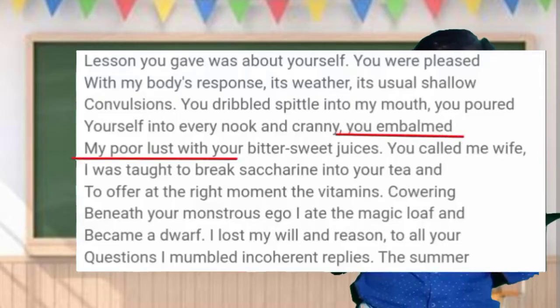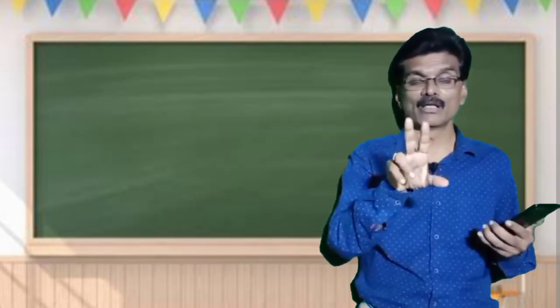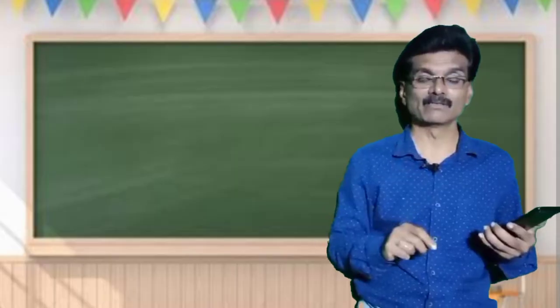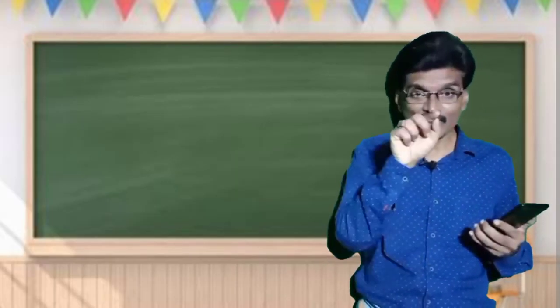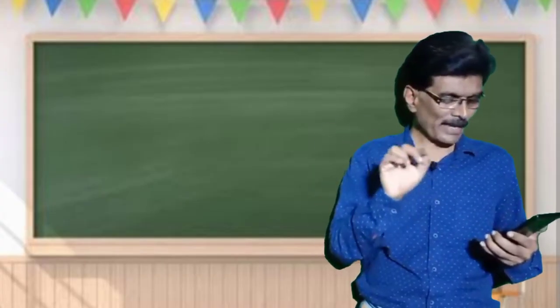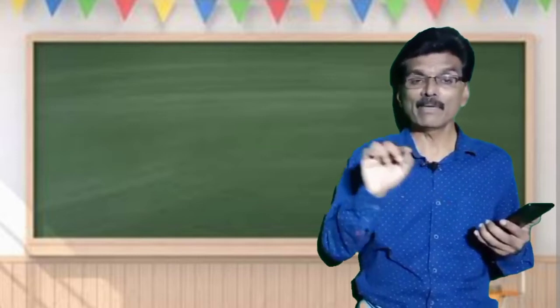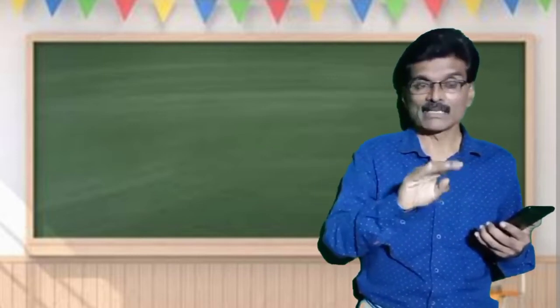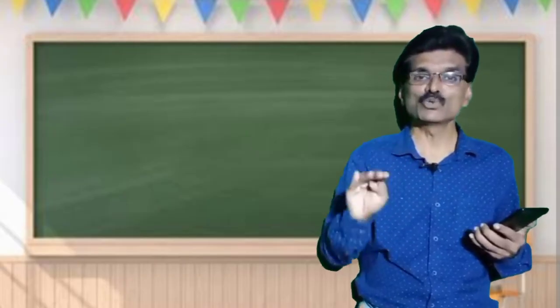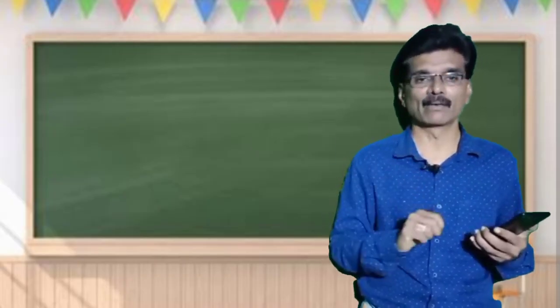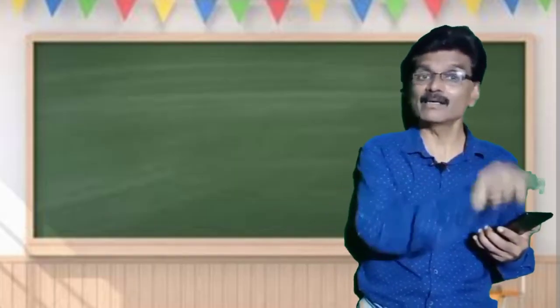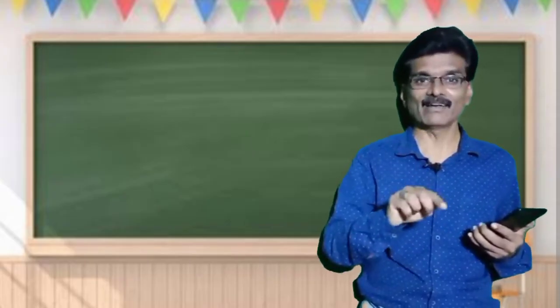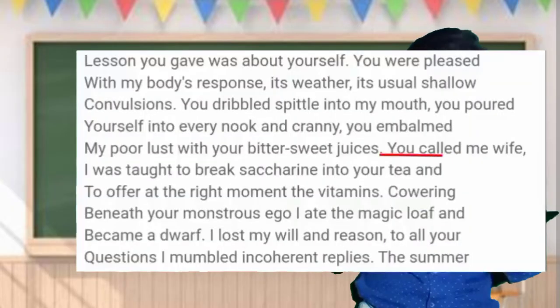You embalmed my poor lust with your bitter sweet juices. See how he has used the oxymoron here. Bittersweet. For him, they may be sweet. For her, they are bitter. Embalming here means putting some balm in order to soothe a wound, in order to reduce the pain. Naturally, it means that he has hurt her. After hurting her, he is putting the balm. You called me wife. That means you gave me a tag.